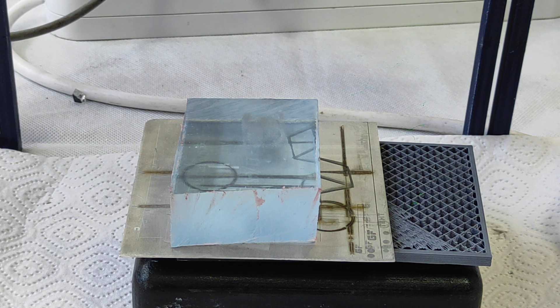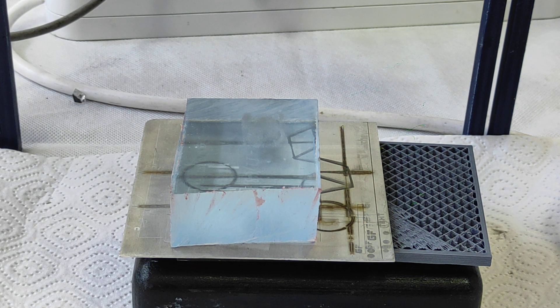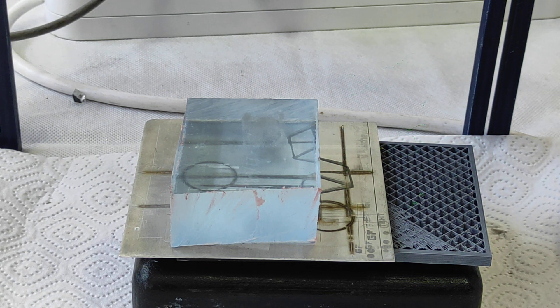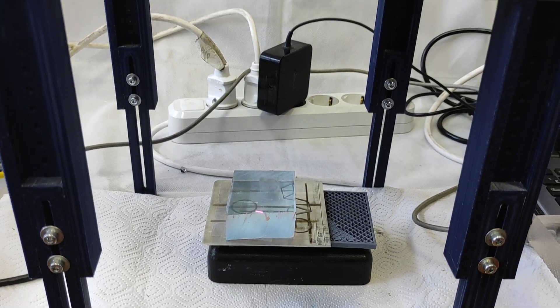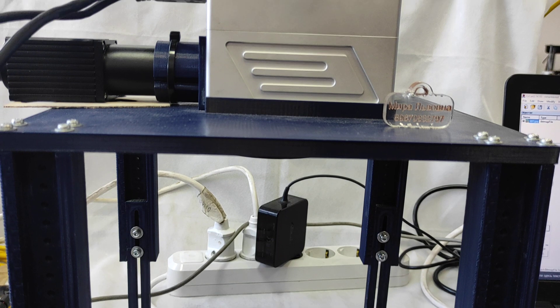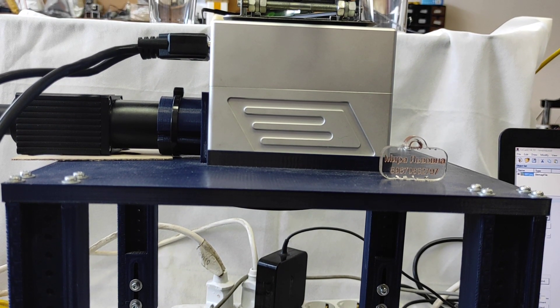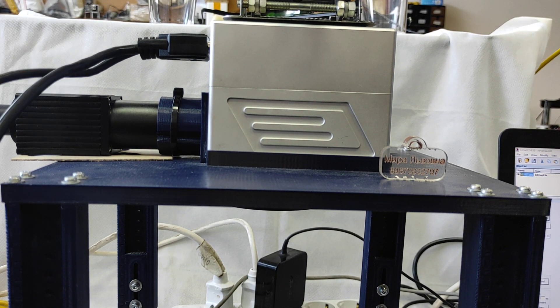So this is our piece of 2.5 centimeter transparent acrylic, so it's one inch thickness, and we are engraving using our DIY Galvo frame with a 30 watt RICUS fiber emitter.